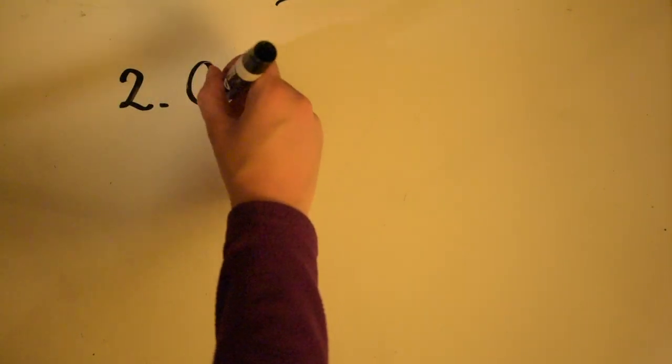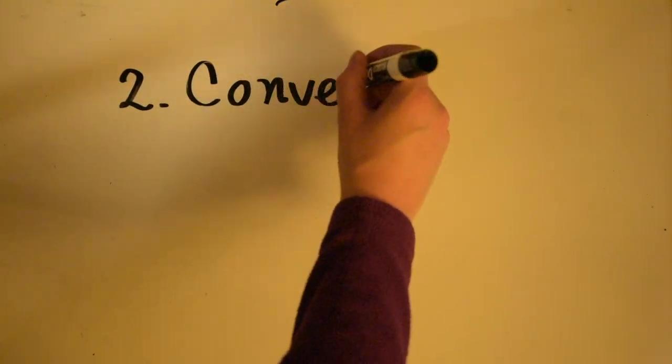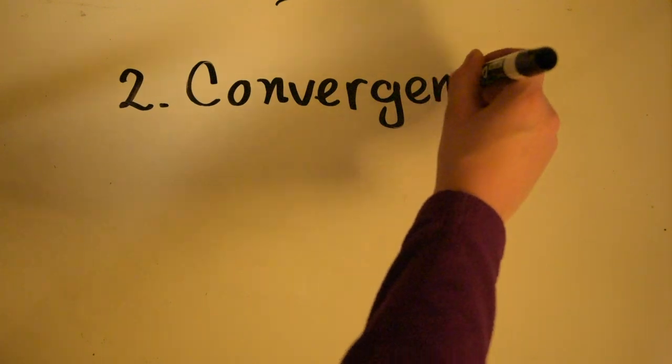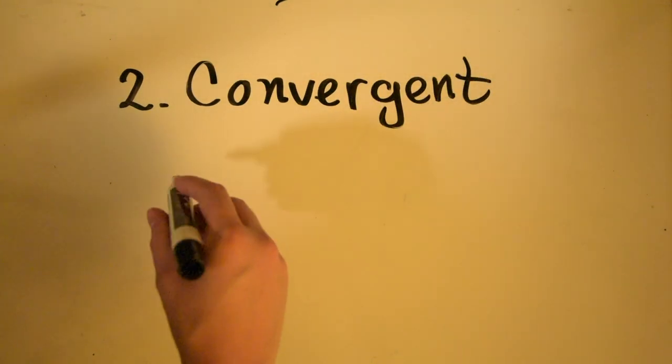The second type of plate boundary that we're going to focus on today is a convergent. And this one's a little different because it has three different components.